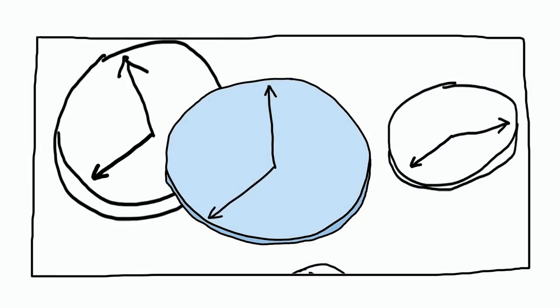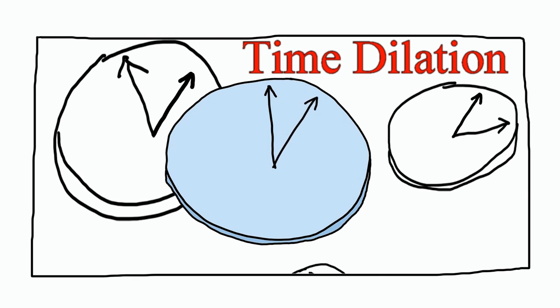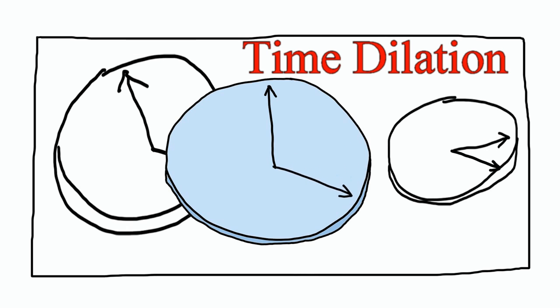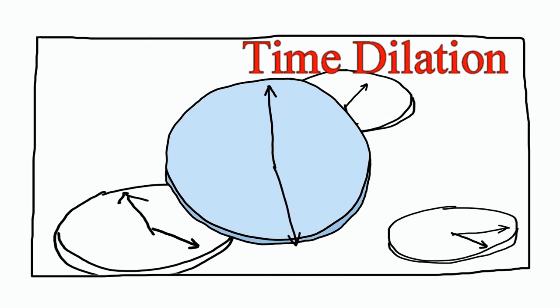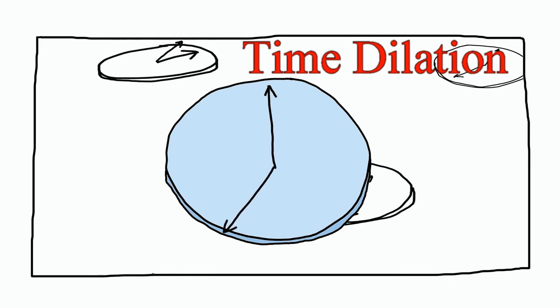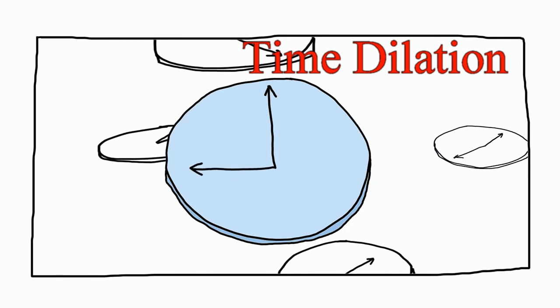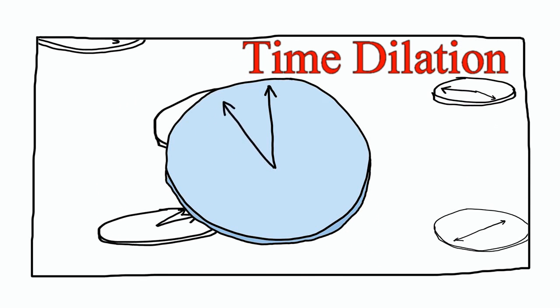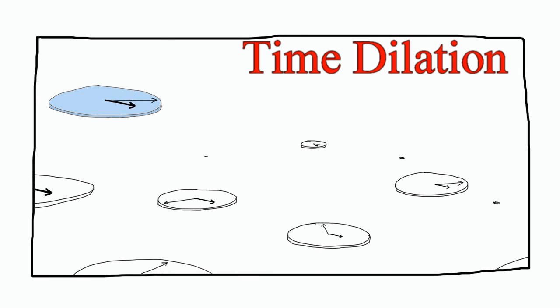Einstein's equations show that the faster you move, the slower time ticks for you. This is called time dilation. An accurate clock at rest with respect to one observer may be measured to tick at a different rate when compared to a second observer's own equally accurate clock. This effect arises neither from technical aspects of the clocks nor from the fact that signals need time to propagate, but from the nature of spacetime itself.